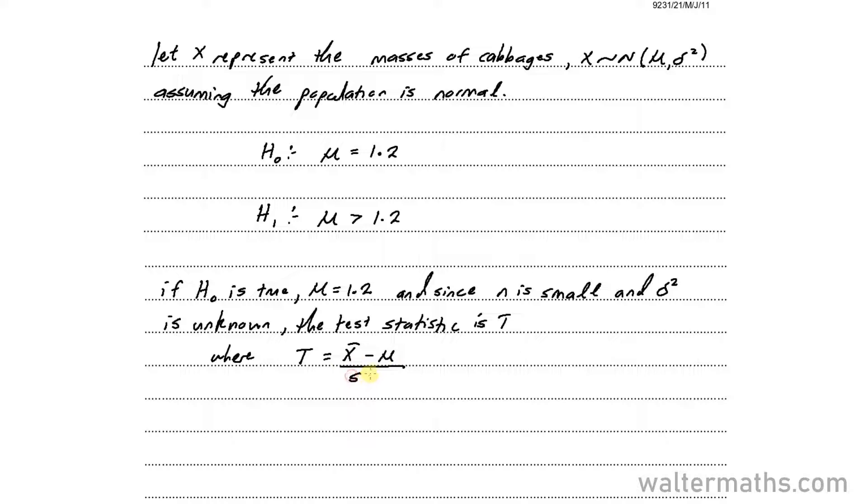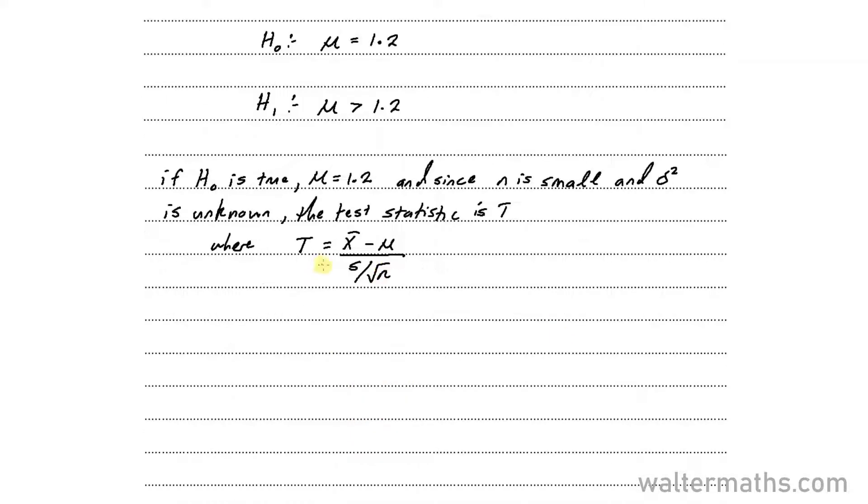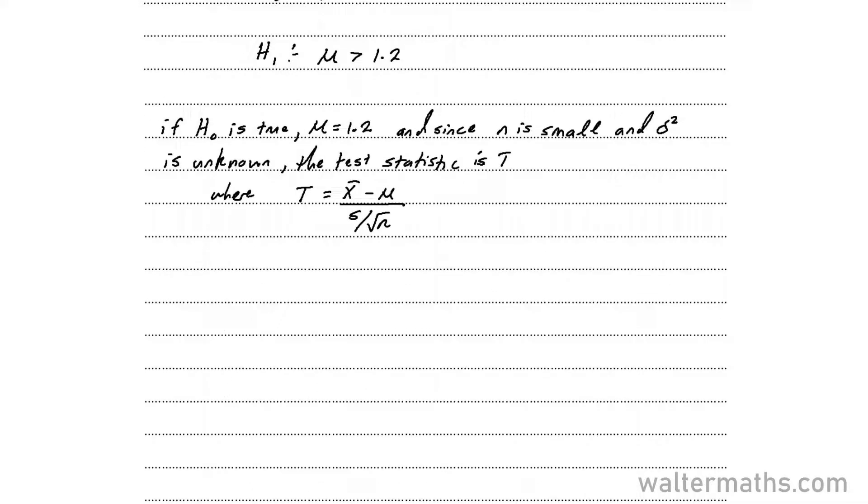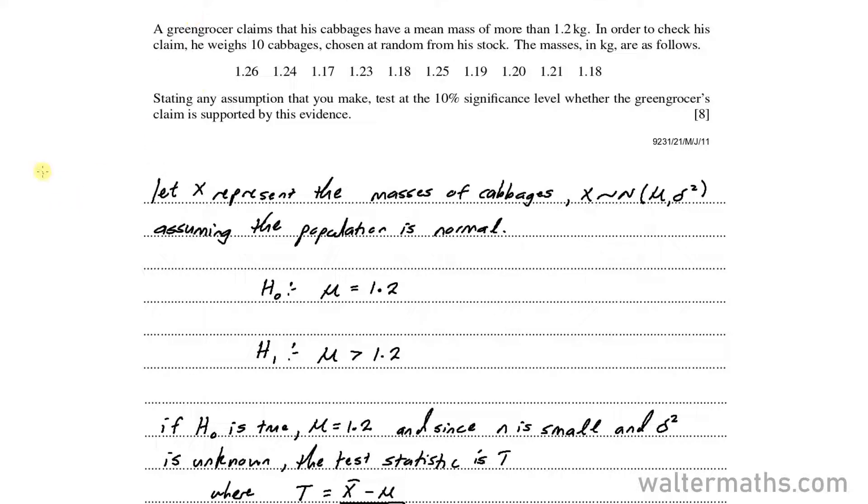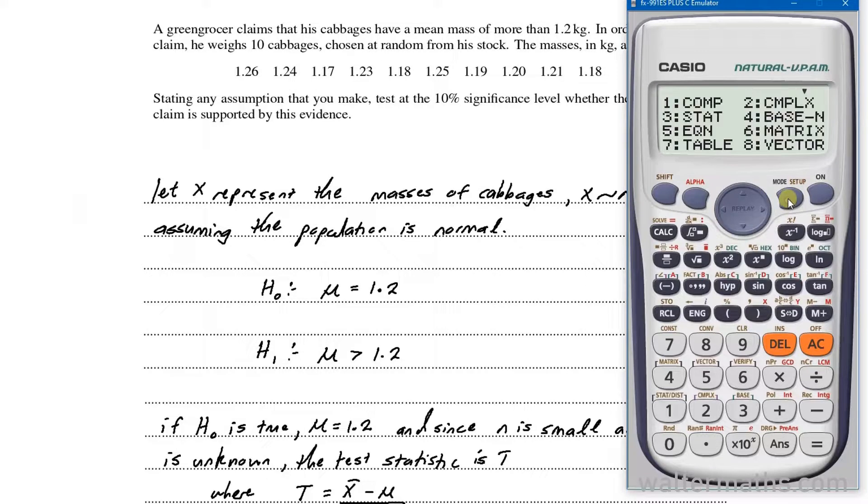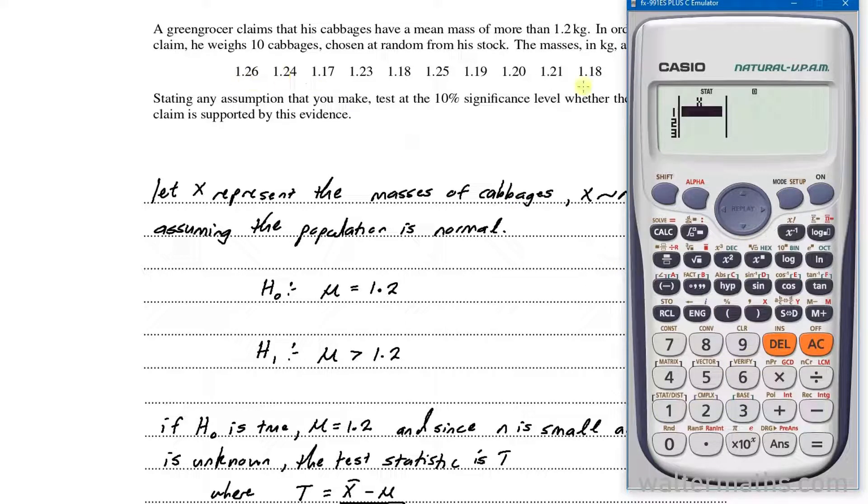In order for us to calculate the test statistic T, we shall need to know the sample mean x̄, and we shall also need to find the unbiased estimate s², from which we will get the s here. For the sample data given, I'm going to enter it into my calculator. I'll go to stat mode, which is 3, and option 1, and I'm going to enter all the data.